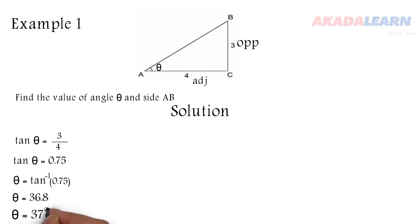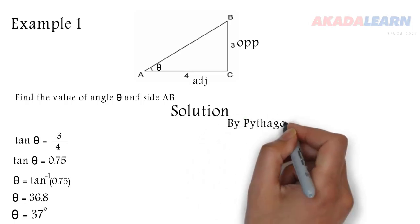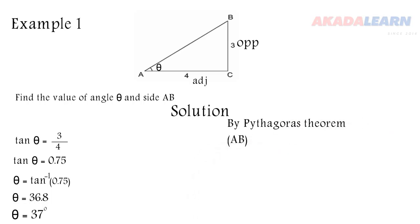So we can just approximate it to whole number as 37 degrees. Your calculator can help you in evaluating tan inverse. Also your four figure table can even help you with that.